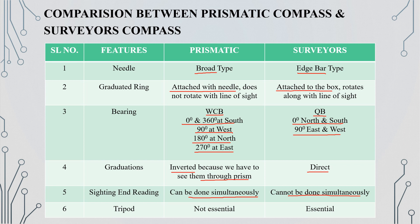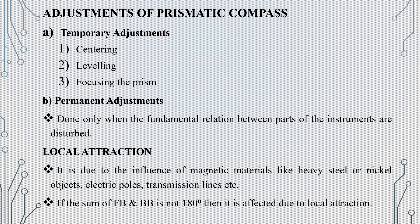The next feature is tripod — tripod is essential for the surveyor's compass. Adjustments of the prismatic compass include temporary adjustments in 3 steps: 1st centering, 2nd leveling, 3rd focusing. Permanent adjustments involve checking the fundamental relationship between parts and correcting any disturbance.